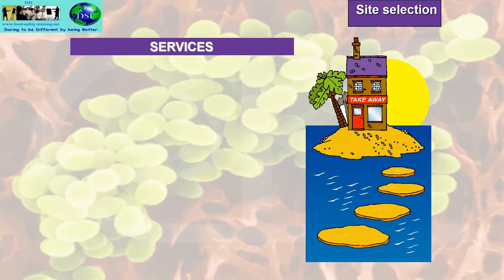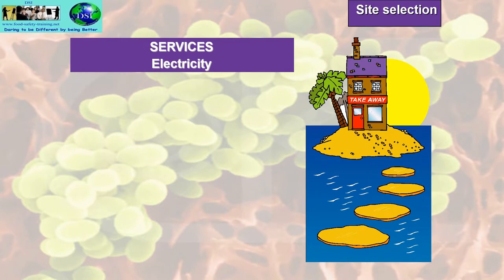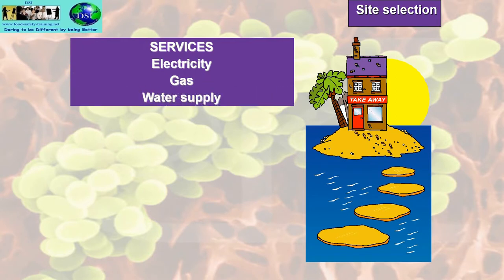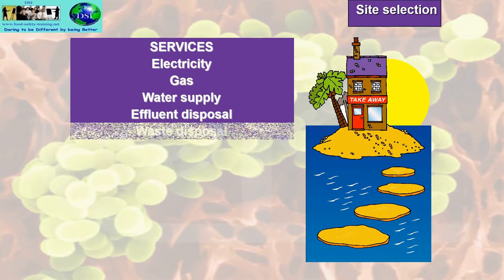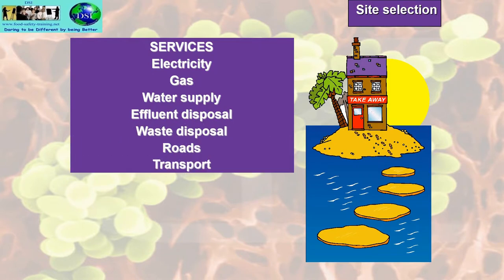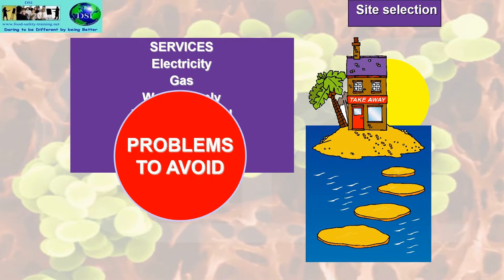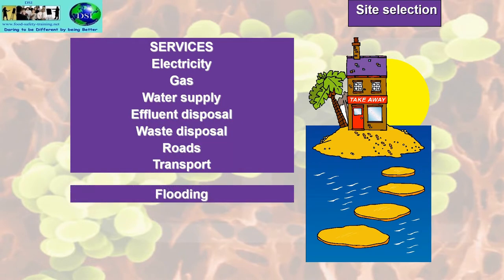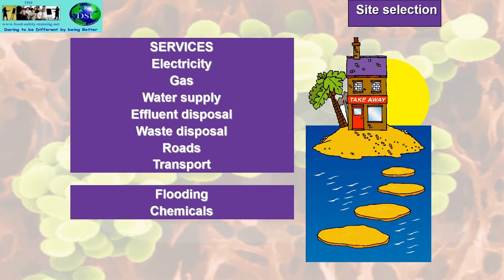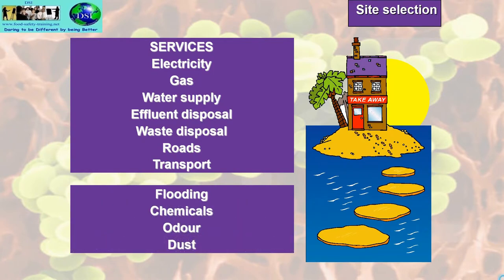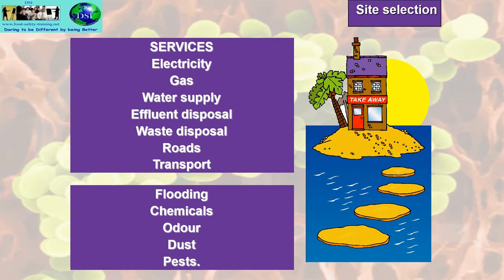For site selection, you must first take services into account — for example electricity, gas, water supply, effluent disposal, waste disposal, roads and transport — and the problems to avoid: flooding, chemicals, odour, dust and pests.